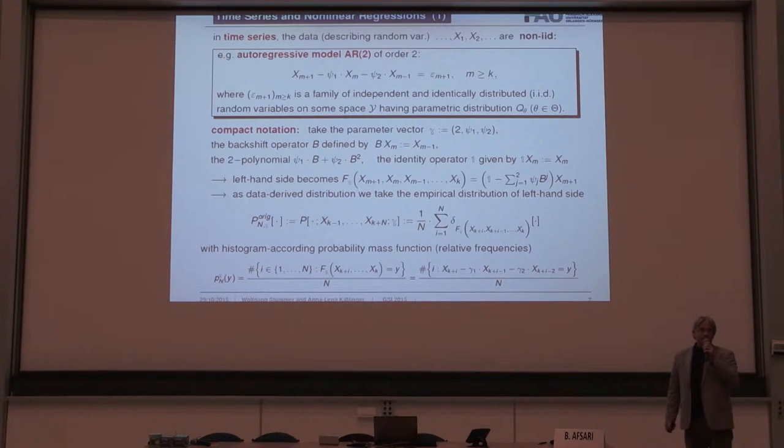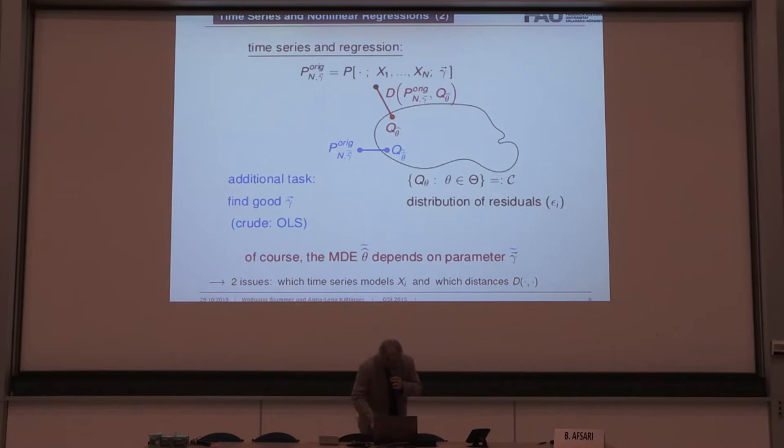But of course in time series we don't have IID data. They are dependent, but let's have a look at the AR(2) model. Then we can rewrite it in this way, on the right hand side we isolate the noise. So we have a parameter vector here consisting basically of the two weights, C1 and C2. And the left hand side we could rewrite in terms of the backshift operator as we know. And then what you do, of course, it should be an IID noise, this transformed series should be an IID noise. So now you take the empirical distribution of the transformed series. That means you take the relative frequencies, the distribution means you have these obvious relative frequencies. So far so good.